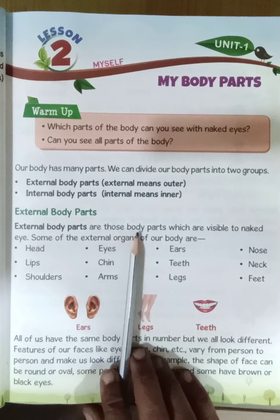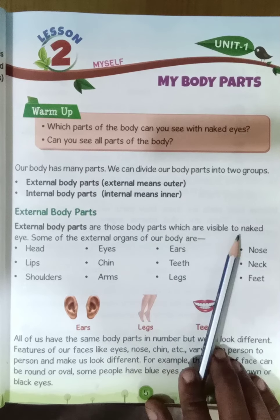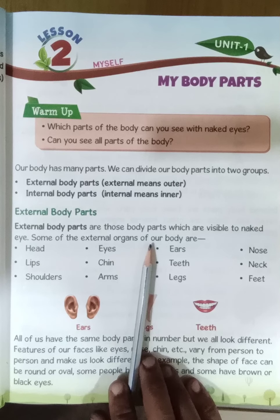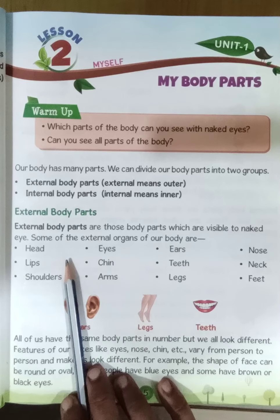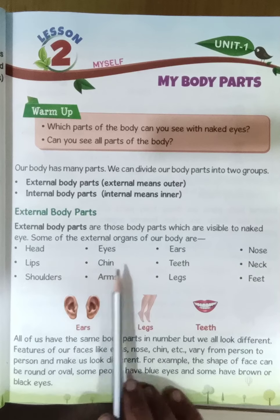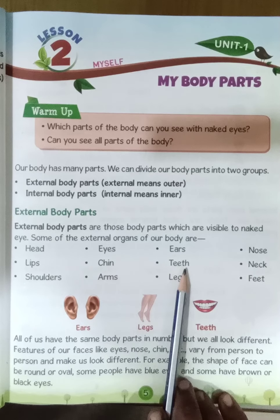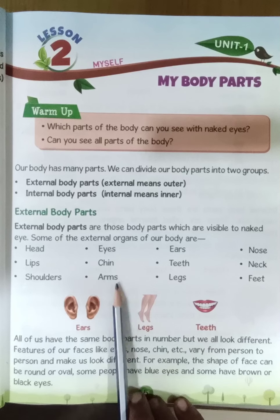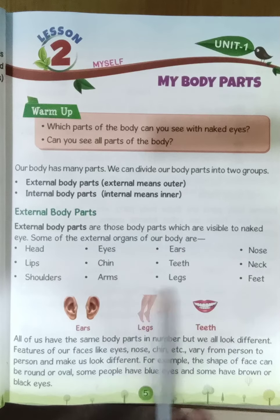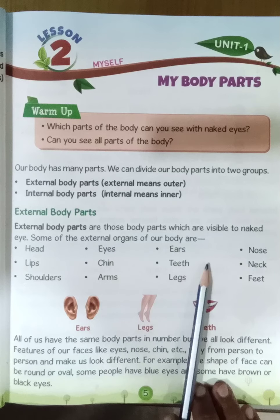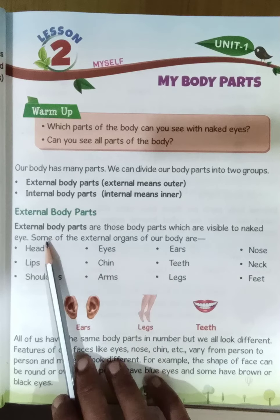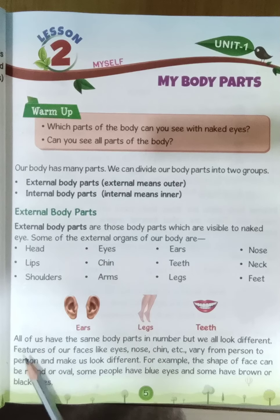External body parts are those body parts which are visible to the naked eyes. Some of the external body organs are head, eyes, ears, nose, lips, chin, teeth, neck, shoulders, arms, legs and feet. We can see all these body parts through our naked eyes. So these are our external body parts.